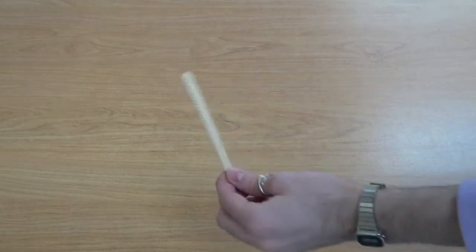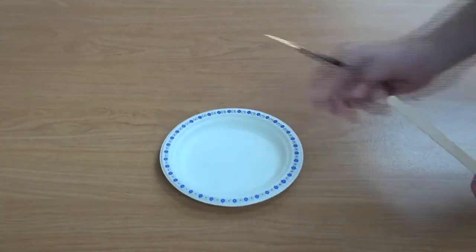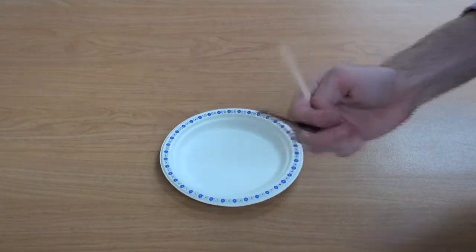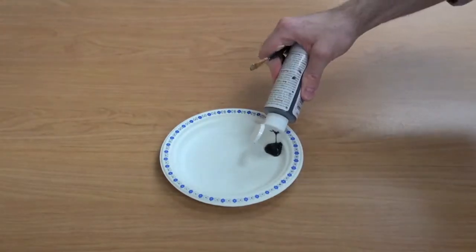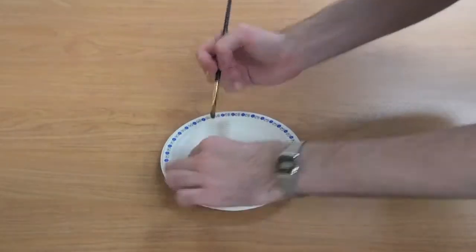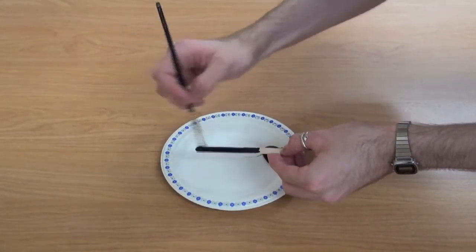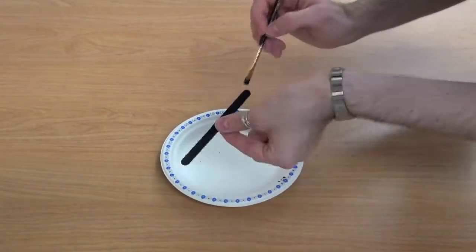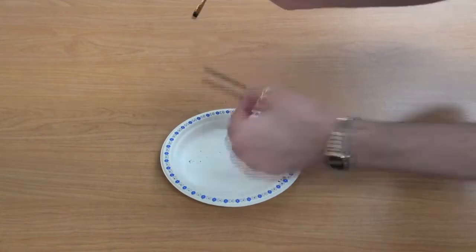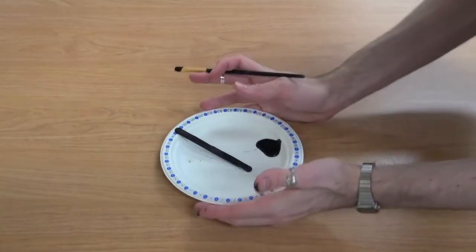Before we get started, we're going to paint the body of our butterfly by painting the popsicle stick completely black. Once done, let it dry and then you can move on to coloring your paper.